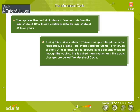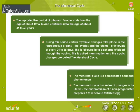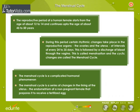This is followed by a discharge of blood through the vagina. This is called menstruation, and the cyclic changes are called the Menstrual Cycle. The Menstrual Cycle is a complicated hormonal phenomenon — a series of changes in the lining of the uterus, the endometrium, of a non-pregnant female that prepares it to receive a fertilized egg.